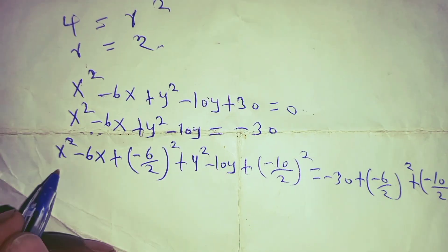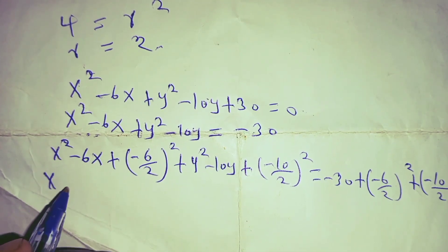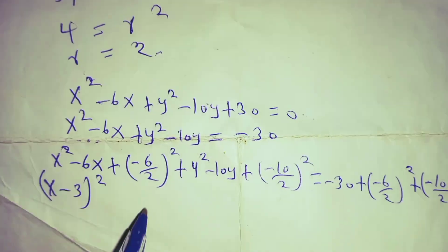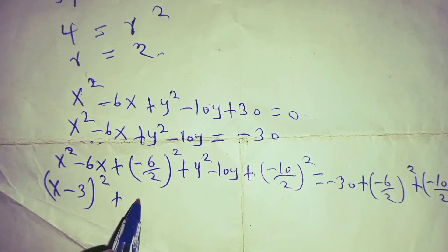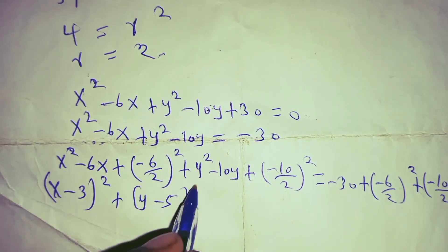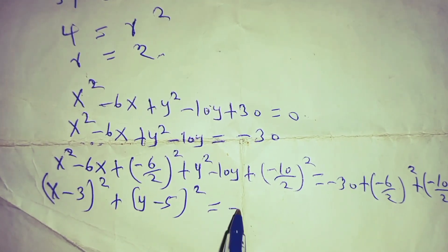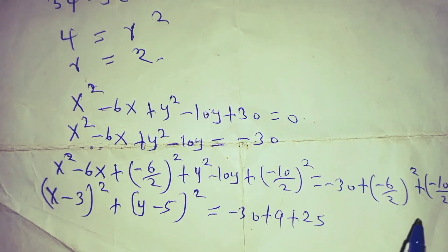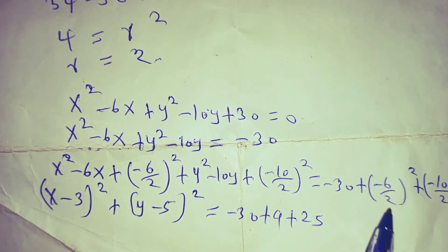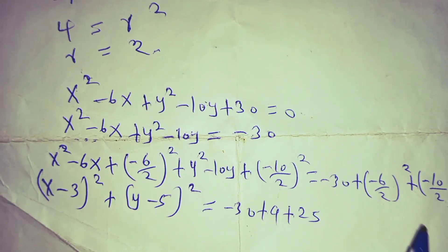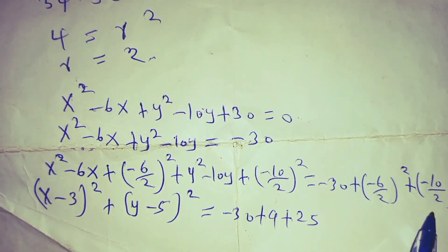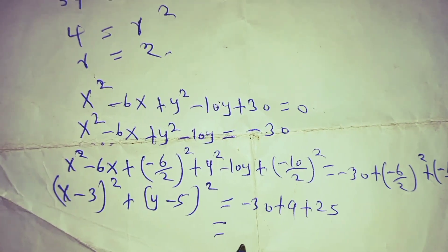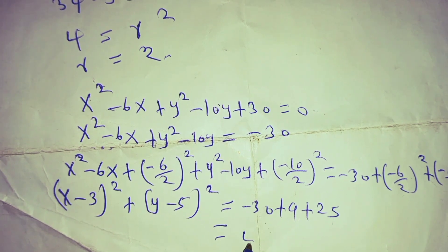Completing the square gives (x minus 3) squared plus (y minus 5) squared equals the negative constant plus 9 plus 25. Note: negative 6 divided by 2 is negative 3, and negative 3 squared is 9; negative 10 divided by 2 is negative 5, and negative 5 squared is 25. This simplifies to equal 4.